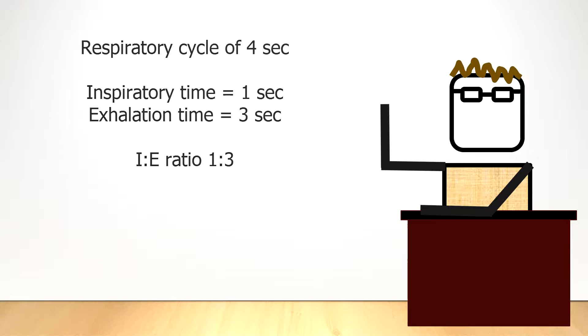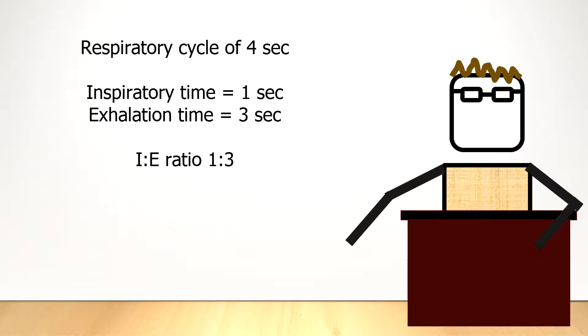Suppose for an example that you have a respiratory cycle of 4 seconds, and you have an inspiratory time of 1 second, and an exhalation time of 3 seconds. This gives you an IE ratio of 1 to 3.